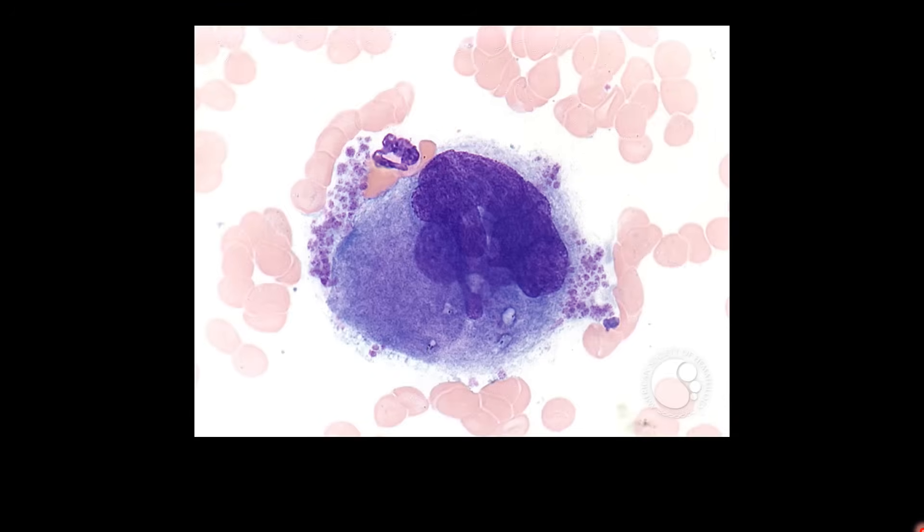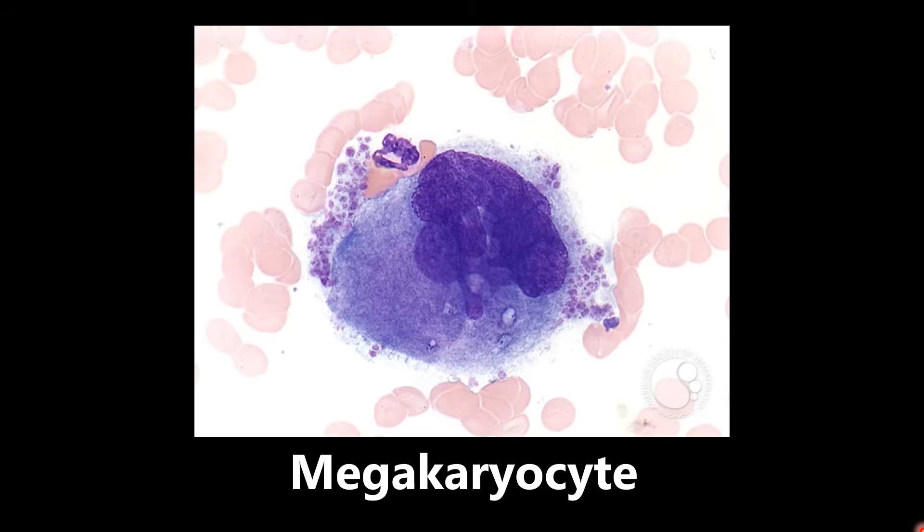This is an example of a megakaryocyte. I include this because I have seen questions that will show the histology of the cell and ask what its function is — which is making platelets. But if you don't know what a megakaryocyte looks like, it's an easy question to get wrong. So just be familiar with what a megakaryocyte looks like.